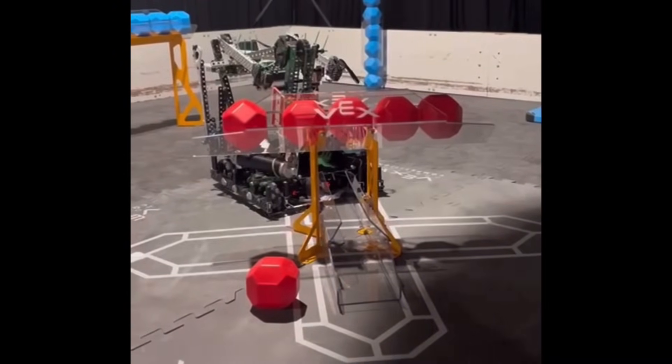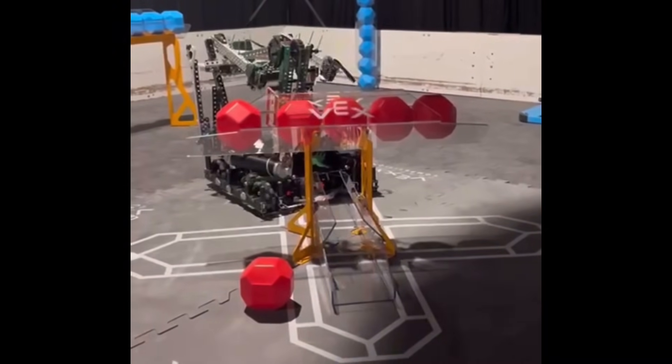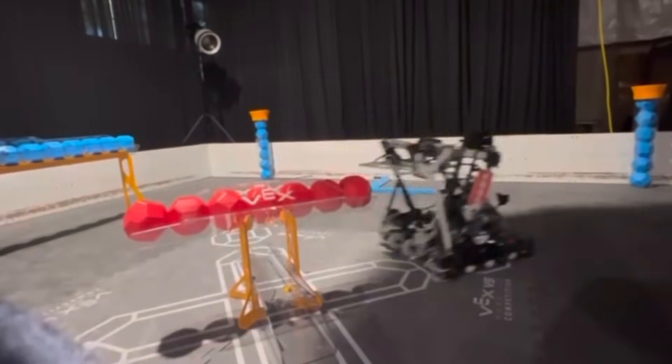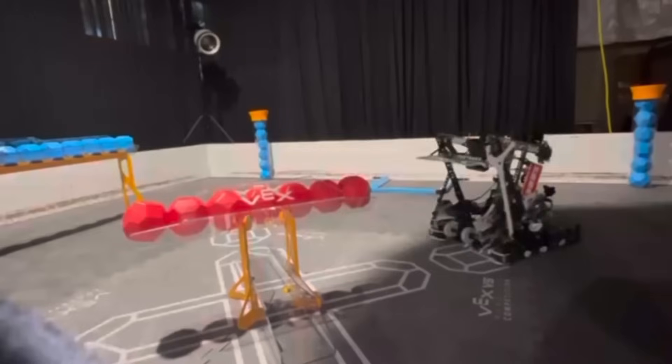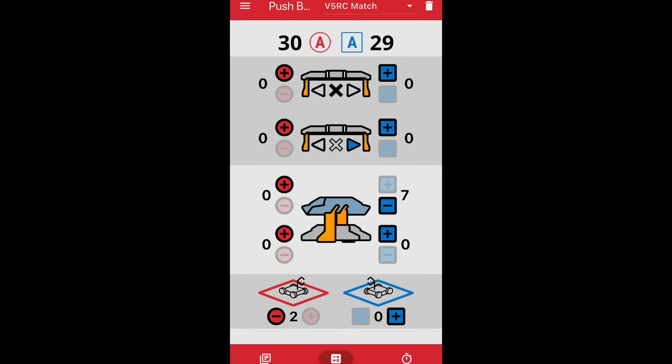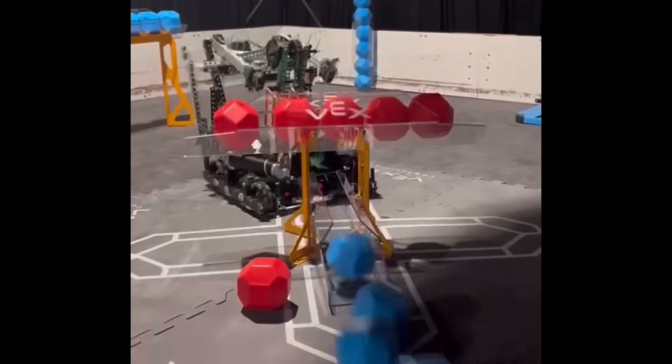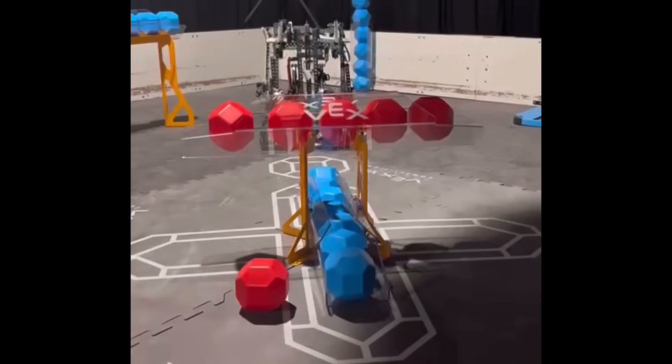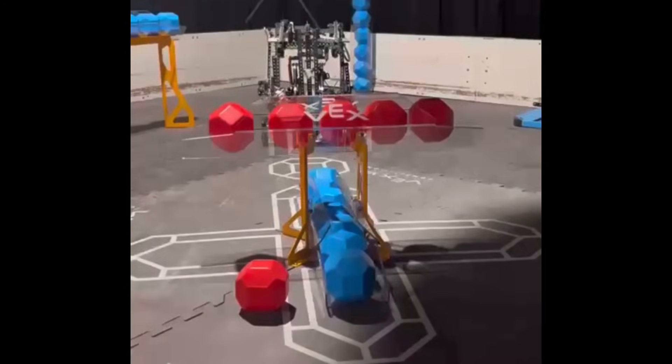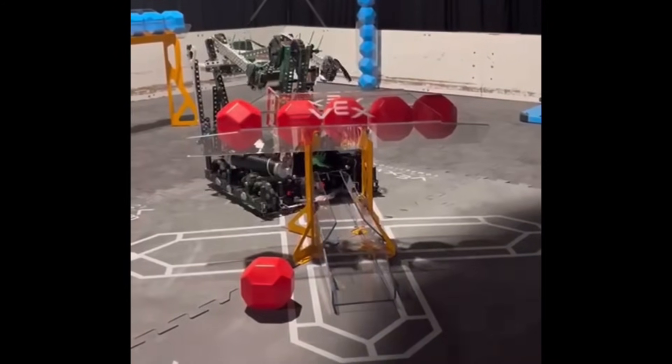But if the one bot on the other side de-scores the top and then scores all their color in the top, it is one point less than double parking. It's 29 for a full top middle and the bonus. And then it's 30 for the parking, which is insane, insanely big, which makes parking kind of useless.